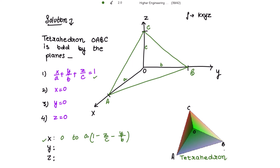These are the limits of x in terms of the two variables y and z. To find the limit for y in one variable, we choose the yz-plane where x equals 0. Substituting x equal to 0 into the plane equation gives y equal to b times (1 minus z over c), so y varies from 0 to b times (1 minus z over c).